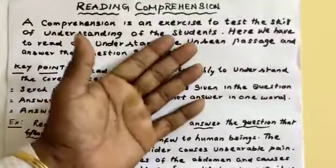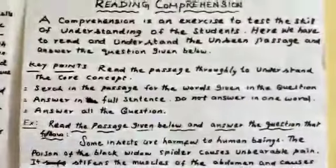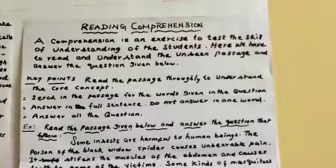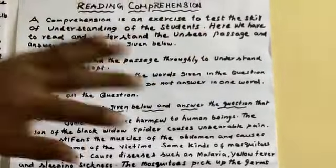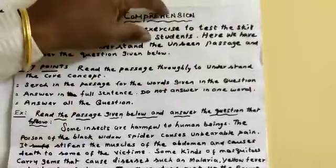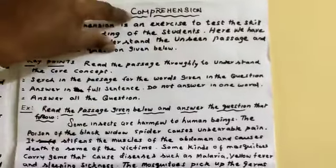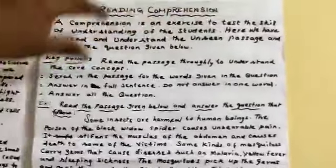What is comprehension? A comprehension is an exercise to test the skill of understanding of students. Here, you have to read and understand an unseen passage and answer the questions given below. It is an unseen passage only — you have not seen it before. So you first read it, understand it, and then write the answer.